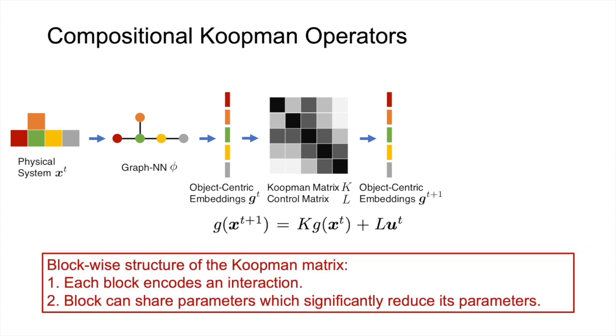Considering the embedding is object-centric, it is natural that the Koopman matrix is block-wise, where every block encodes an interaction between two objects. Further, the blocks represent the same physical interaction, share the parameters. Thus, the total amount of parameters only depends on the number of different interactions and does not scale with the number of objects.